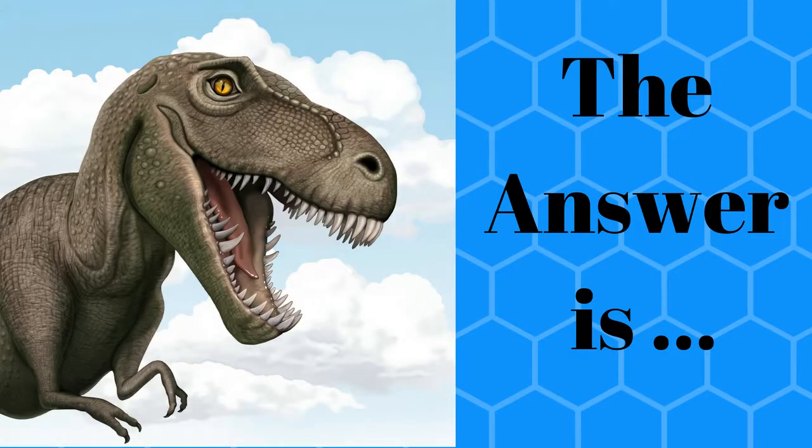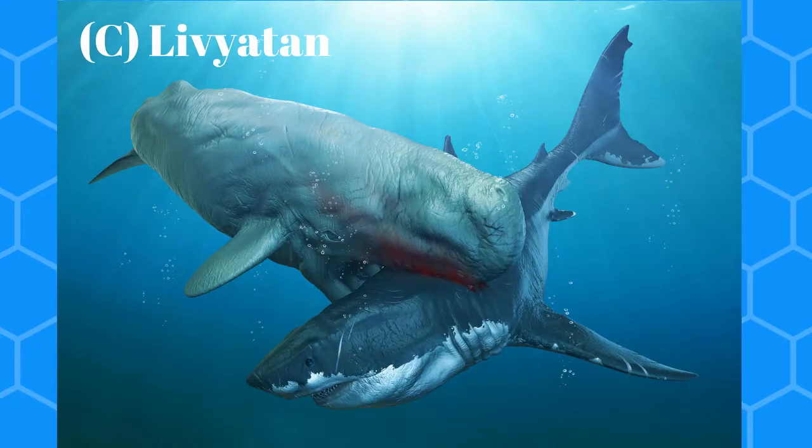The answer is C, Leviathan. The Leviathan had the largest teeth of any predator ever — the teeth were about 12 inches long. The Leviathan was about 50 feet long and weighed about 50 tons.